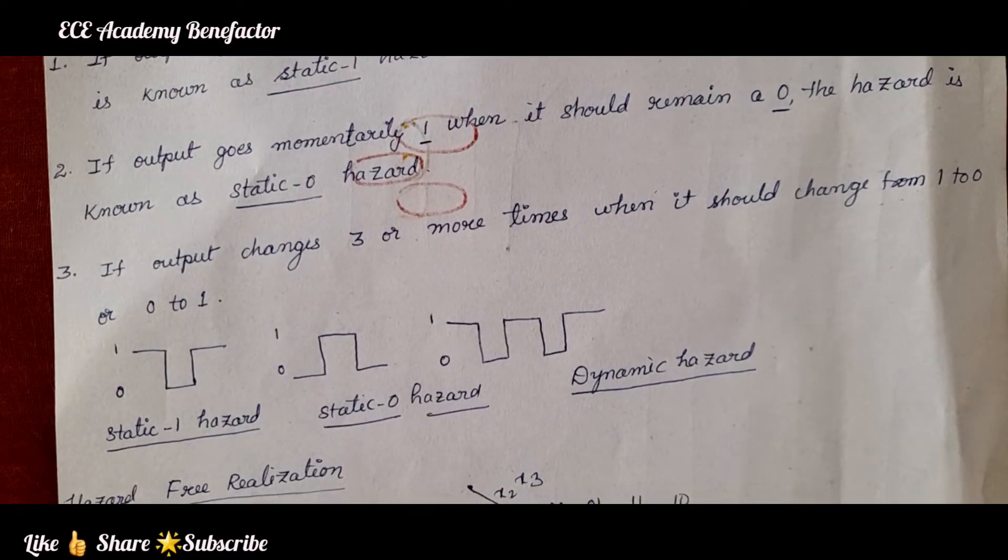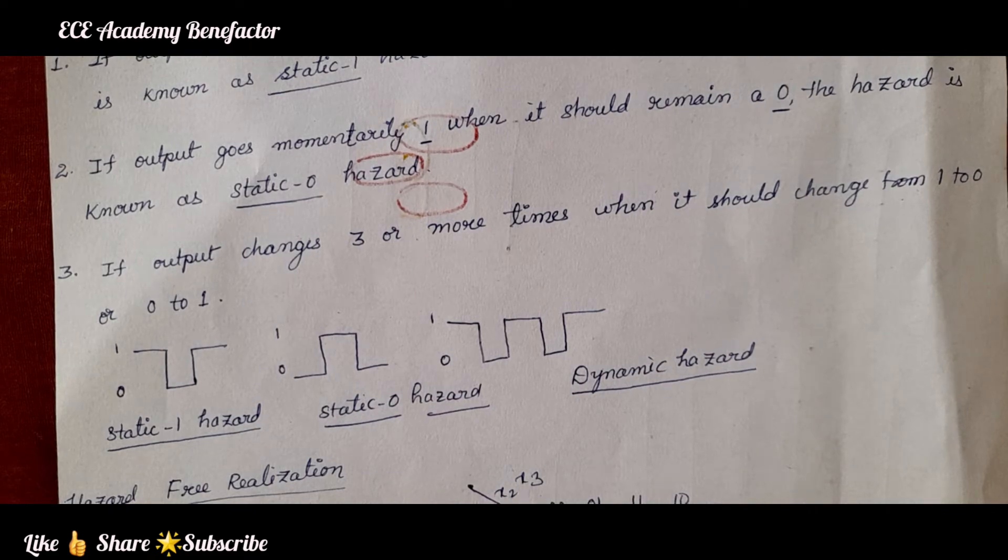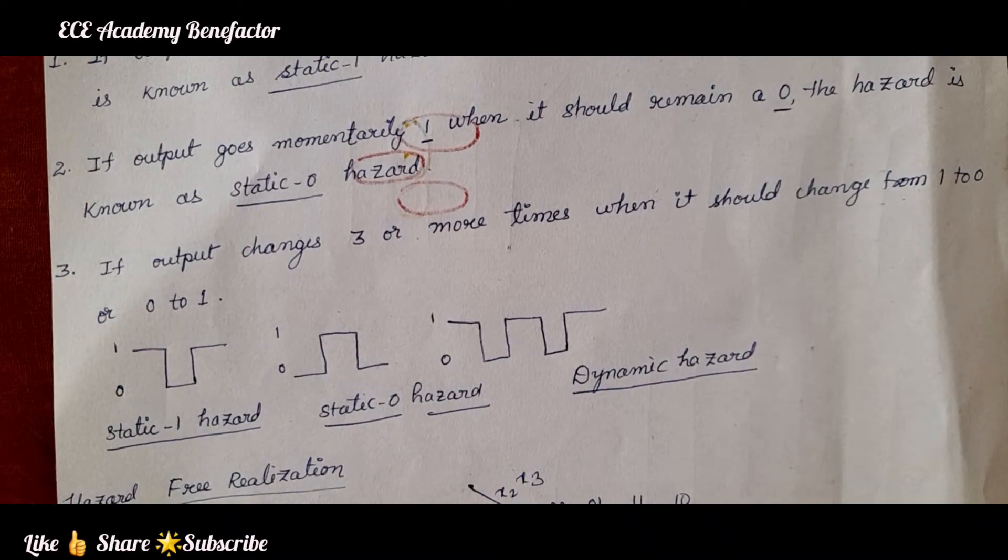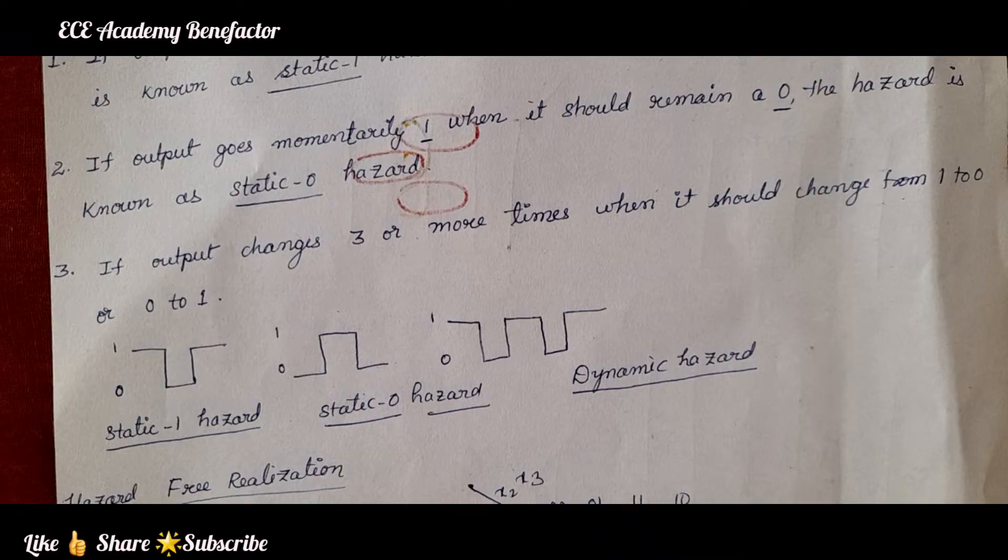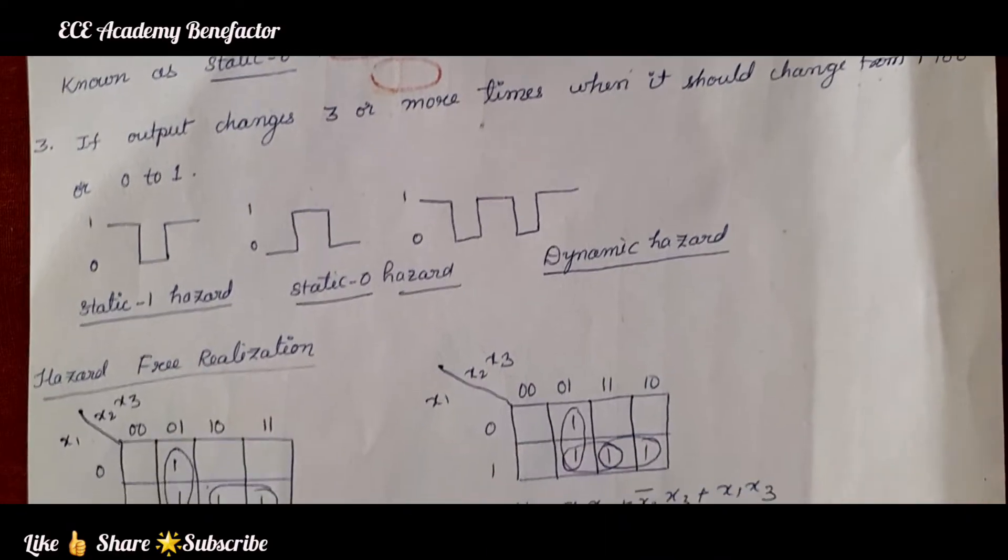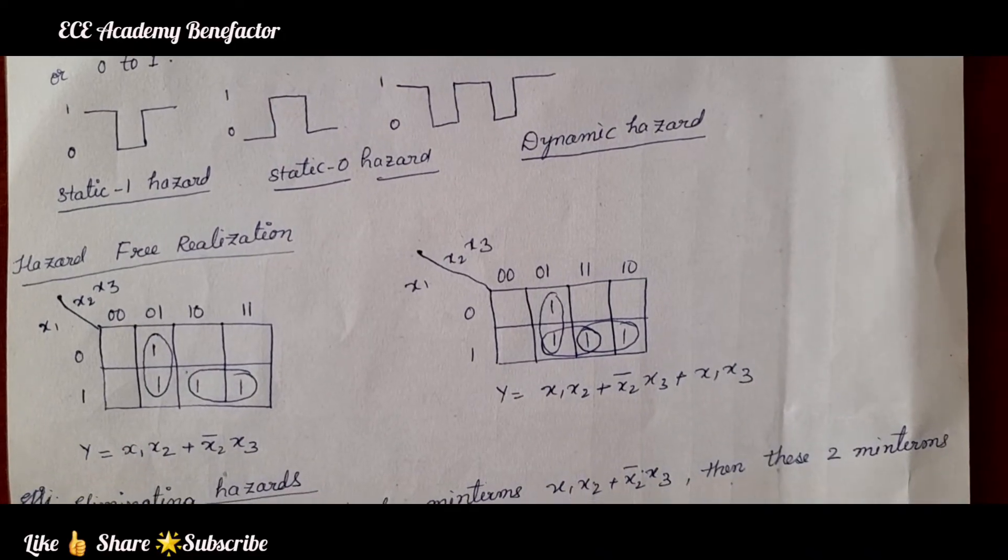How can we make the combinational circuit hazard free? Why it is necessary to make it hazard free? Because it is causing malfunctioning, it is not showing the right value of output.